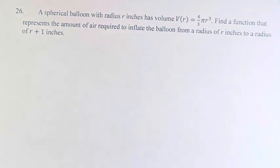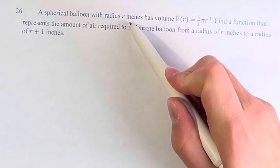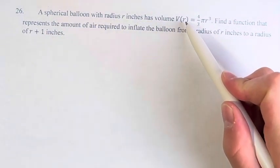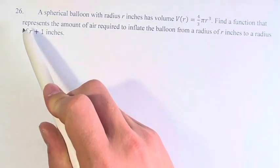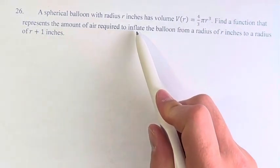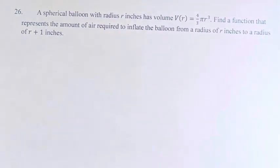Hello, and welcome back to another video. In this problem, we're told a spherical balloon with a radius r inches has volume V(r) equals 4/3 π r cubed. And we're asked to find a function that represents the amount of air required to inflate the balloon from a radius of r inches to a radius of r plus 1 inches.